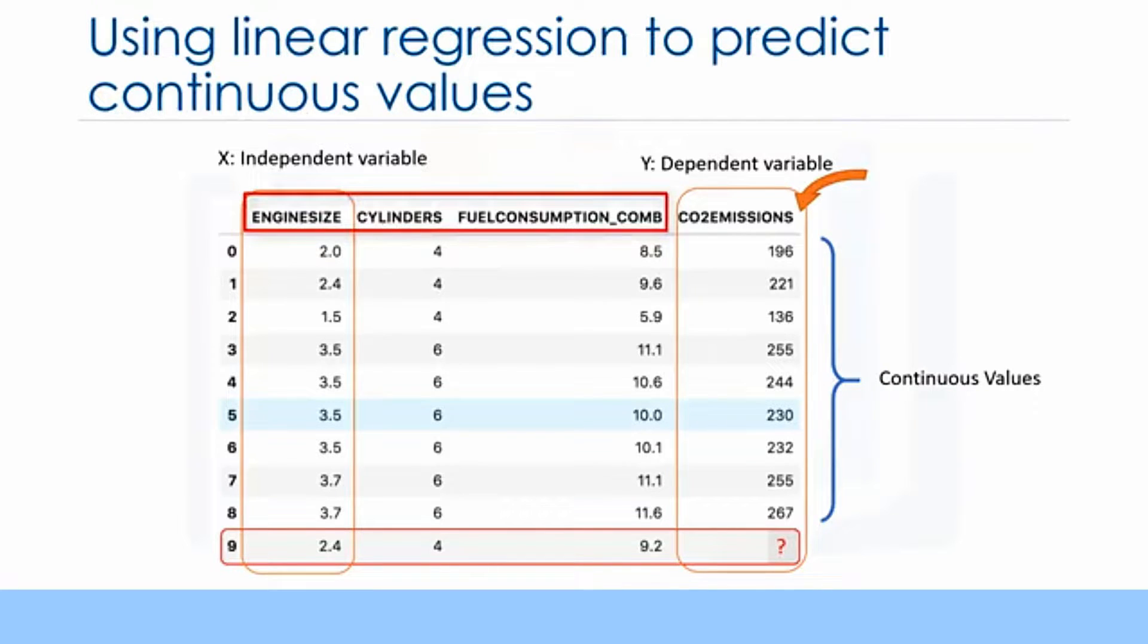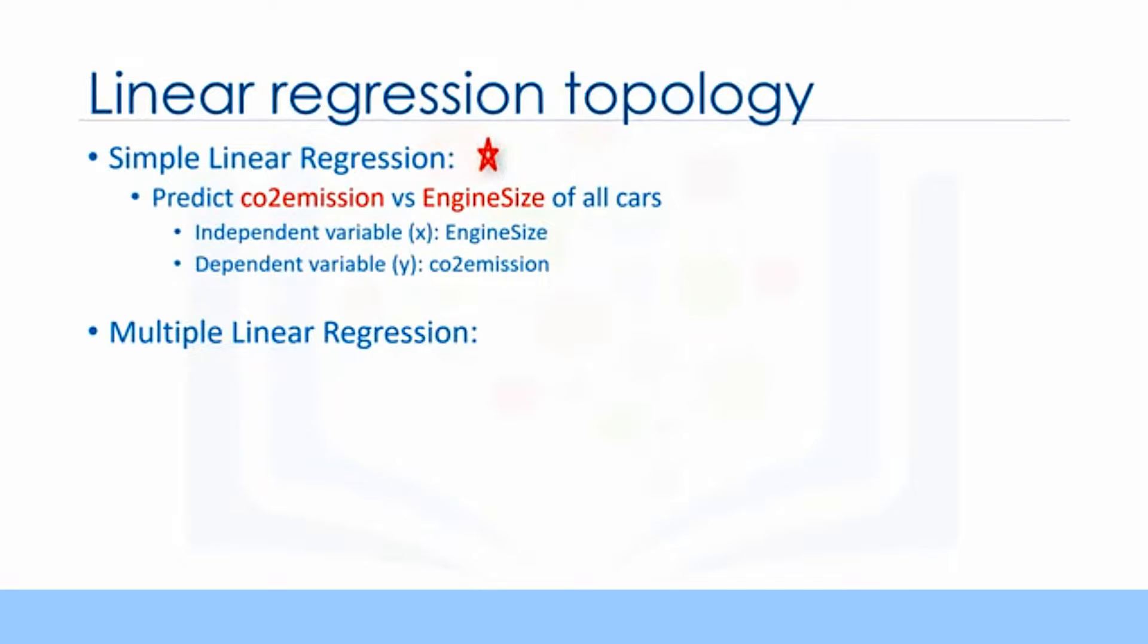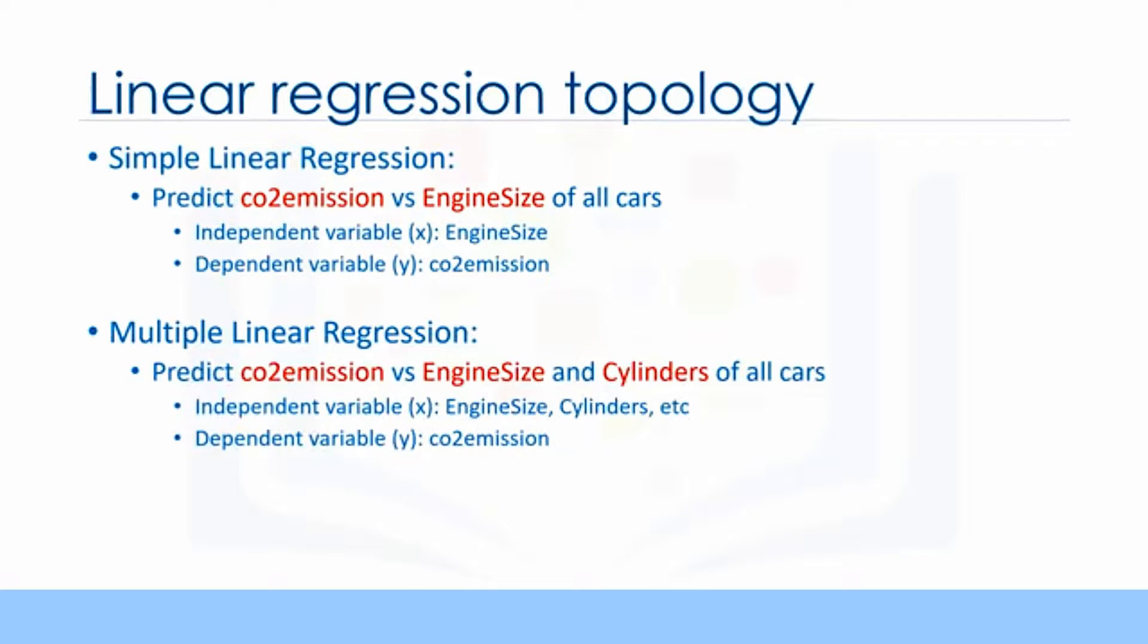However, the independent variables can be measured on either a categorical or continuous measurement scale. There are two types of linear regression models: simple regression and multiple regression. Simple linear regression is when one independent variable is used to estimate a dependent variable, for example, predicting CO2 emission using the engine size variable. When more than one independent variable is present, the process is called multiple linear regression. Our focus in this video is on simple linear regression.